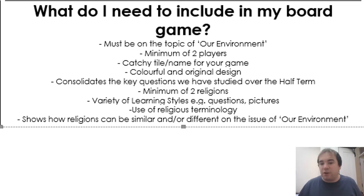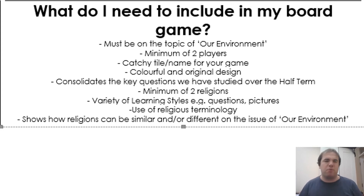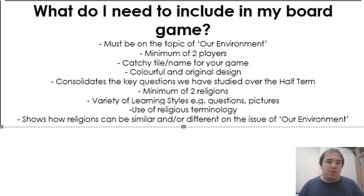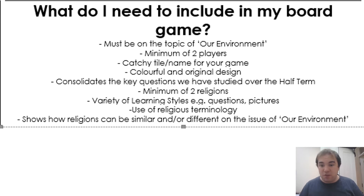A few of you got a bit confused on the two religions point, because yes, we haven't spent lessons breaking down each religion one by one — instead we made references to religions throughout. So how to apply this: for example, if your game was on vegetarianism, you could bring in Buddhist beliefs about vegetarianism by referring back to the Five Precepts — that would be a really good example. Think about when it comes to the afterlife, what do Christians believe, and how is that different to other religions? Try to refer to at least two religions, think of a variety of learning styles — questions, pictures, etc. — and try to use some religious terminology, specific names of religions.